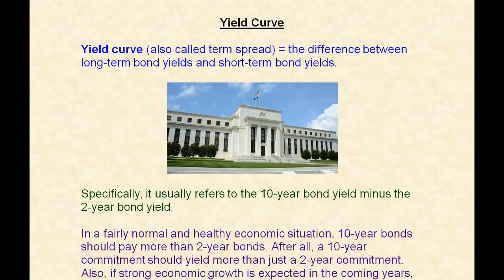So yield curve — what is it? It's also called the term spread. It is the difference between long-term bond yields and short-term bond yields. Specifically, it usually refers to the 10-year bond yield minus the two-year bond yield.